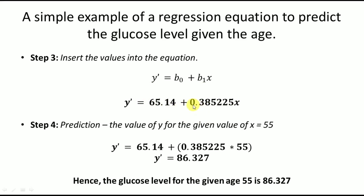Now we use this model to predict the value of y given x equals 55. Substituting: y′ equals 65.14 plus 0.3855 times 55. Solving this equation, we get the value of y as 86.327. Hence, the glucose level for age 55 is 86.327.